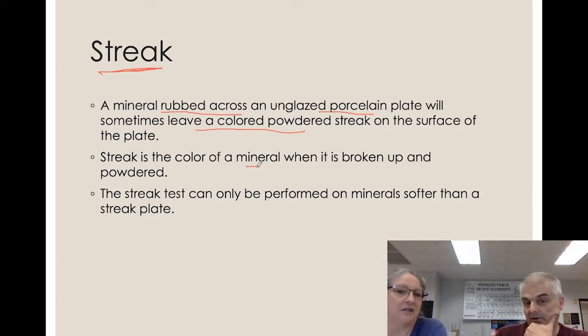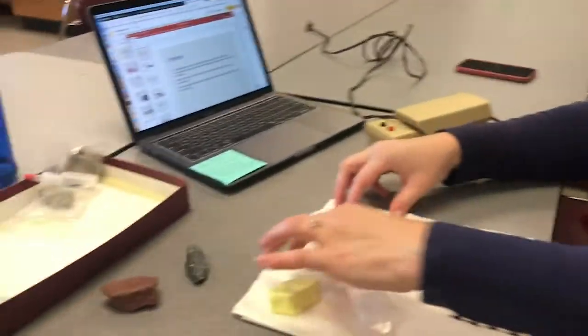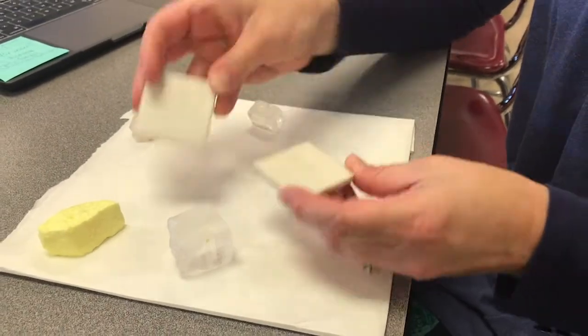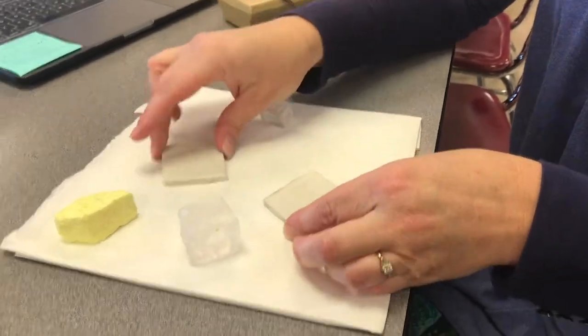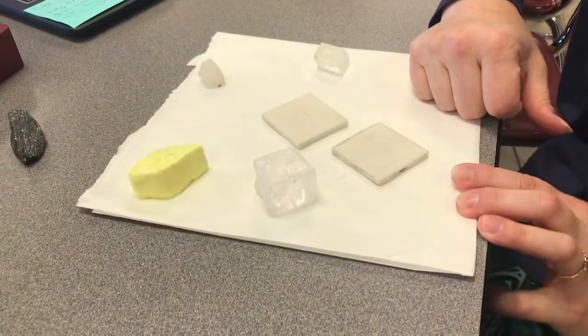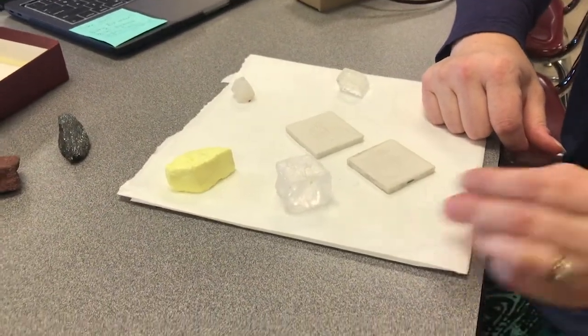Don't focus on the color of the rock — we're looking for the color of the streak. So should we do that? Yeah, let's show some streaks. First thing, you need to have a porcelain plate — that's just like tile from your bathroom or something. Exactly right.